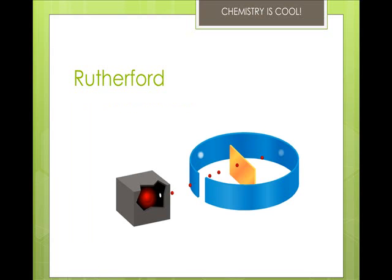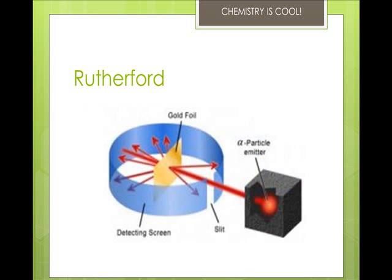However, what he got was very different. He explained this by saying that the atom is actually mostly empty space, instead of an evenly distributed plum pudding of positive charges. He calculated that there was a small, dense, positively charged piece at the center that will deflect positively charged alpha particles if they get close enough.